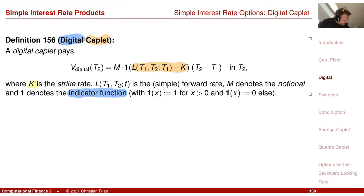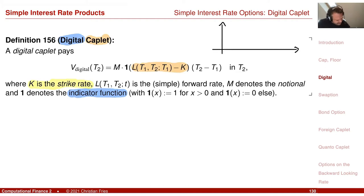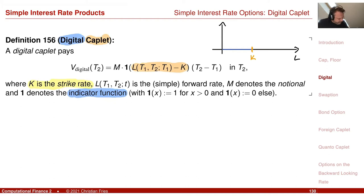So we have again here the strike rate K. The payoff of the digital at payment time, as a function of the interest rate L(T1, T2) observed in T1, is: we receive zero if we are below K, or we receive the indicator function — one, or one times M if there is a notional — if we are above K. So we have this discontinuous payoff.